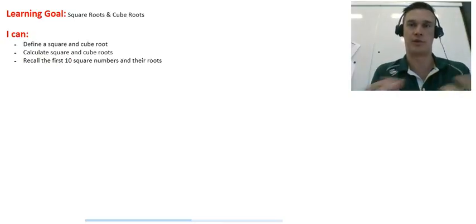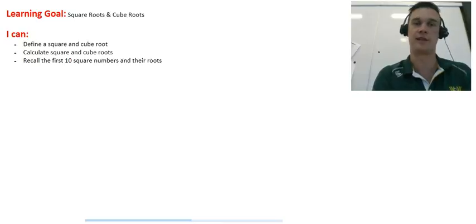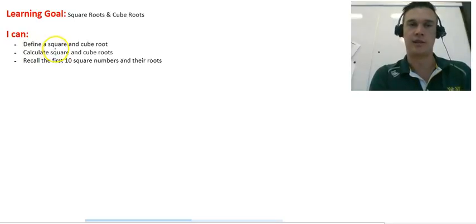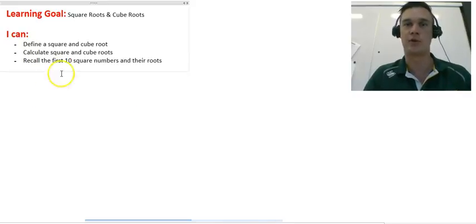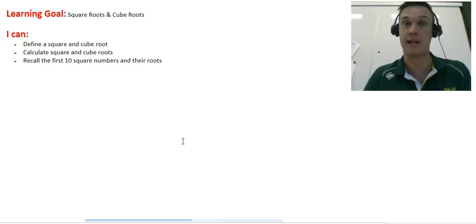Now this is the opposite and it's important that we understand these three things. By the end of this lesson you need to be able to define what a square and cube root is, calculate these square and cube roots, and I'm going to give you a big hint: if you can understand the first ten square numbers it's going to be easier for you to calculate these.